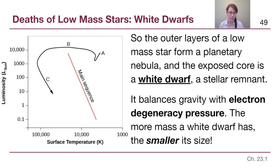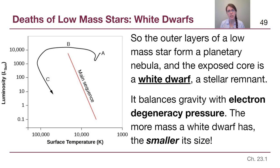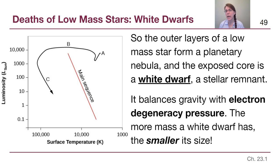The white dwarf balances gravity with a different type of pressure called electron degeneracy pressure. The electron part of that term means that all of the atoms' electron clouds are up against each other. It's kind of like a room full of balloons — the outer surface of the balloons are like the electron cloud, with the nucleus as a tiny thing in the middle. As you collect all the balloons, they can only get so close together, and if you squash on them more, they get a little smaller. That's what the degeneracy part means: as you add more mass, the white dwarf gets smaller, not bigger.